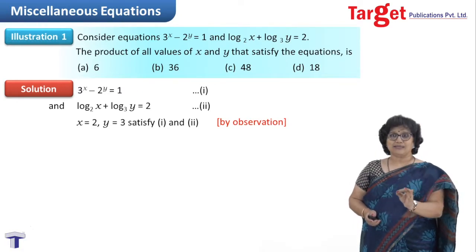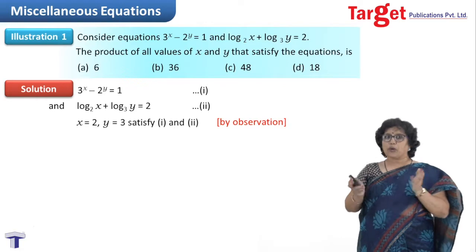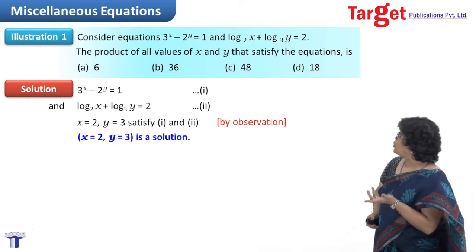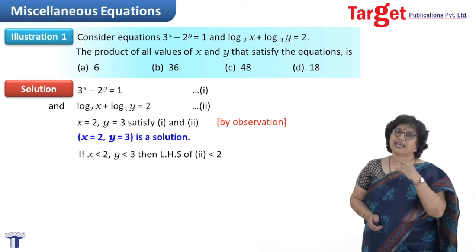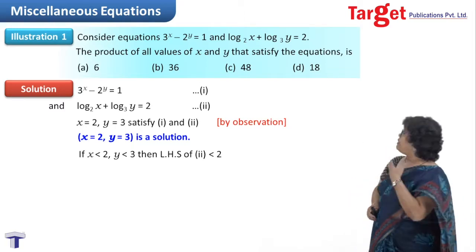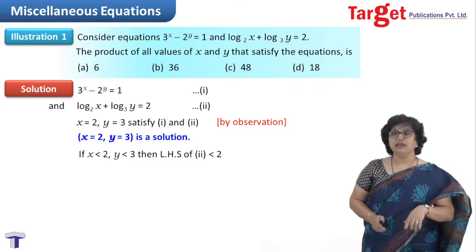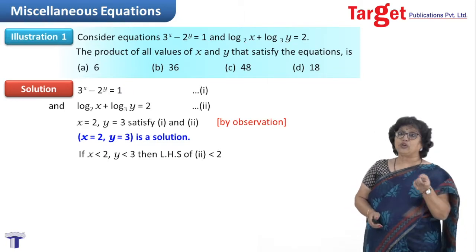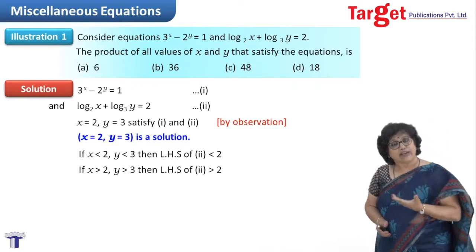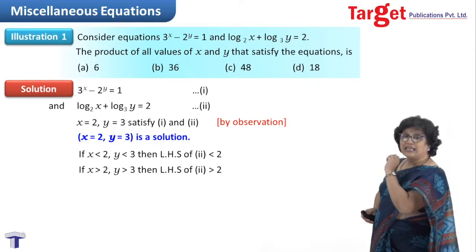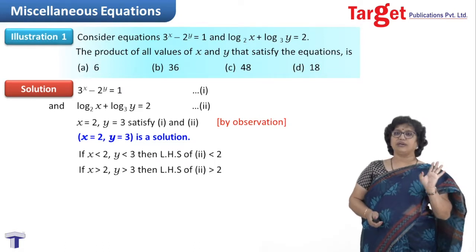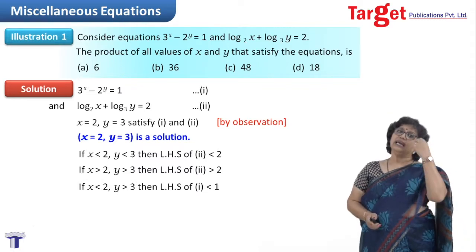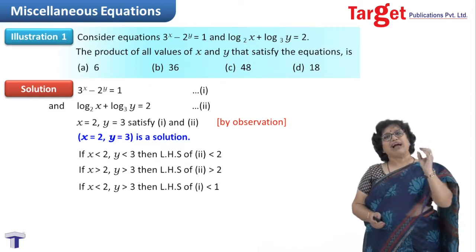When doing by observation, your duty is to check what other possibilities exist. If x<2, y<3, then the left-hand side of the second equation is less than 2, so this won't work. If x>2, y>3, then left-hand side of second equation is greater than 2, so this combination won't work either.